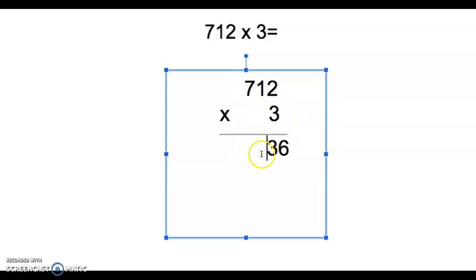And then 7 times 3 is 21, but it's really 700 times 3, so 700 times 3 is 2,100. Remember that when we did the distributive property yesterday. So 712 times 3 is 2,136. And again, we did 3 times 2 is 6, 3 times 1 is 3, and 3 times 7 is 21, so we get 2,136.